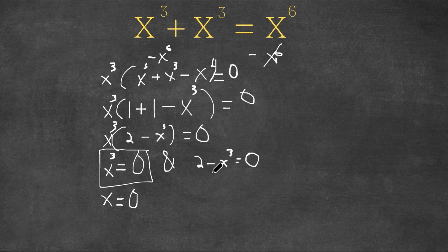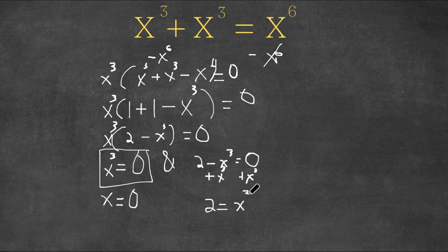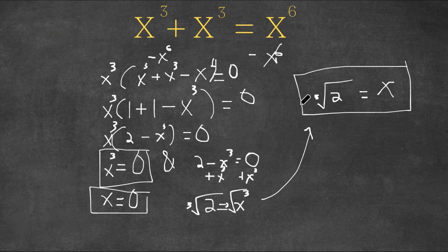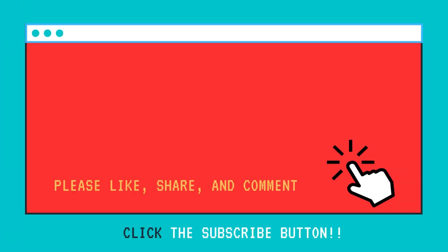Now let's solve the second equation. Let's add x to the power of 3 on both sides, so we get 2 is equal to x to the power of 3. Now if we take the cube root on both sides to cancel out this exponent, we get the cube root of 2 is equal to x, since the cube root of x to the power of 3 is simply x. So this is another solution to this equation. Both x equals 0 and x equals the cube root of 2 are solutions.